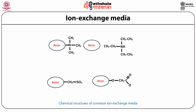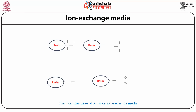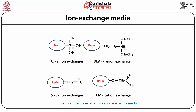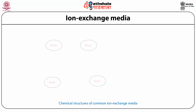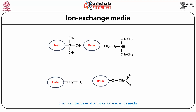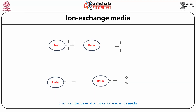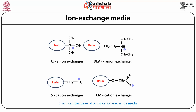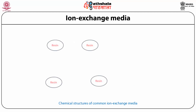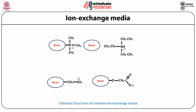The figure on screen shows the chemical structures of common ion exchange media: Q anion exchanger, DEAE anion exchanger, S cation exchanger, and CM cation exchanger. Q and DEAE are anion exchangers; S and CM are cation exchangers. Q is a strong anion exchanger, DEAE is a weak anion exchanger, S is a strong cation exchanger, and CM is a weak cation exchanger.